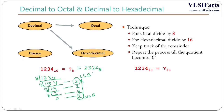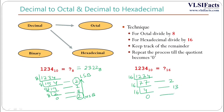Now let us convert the same decimal number 1234 to its hexadecimal equivalent using a similar division process. Dividing by 16: 1234 gives quotient 77, remainder 2. Then 77 divided by 16 gives quotient 4, remainder 13. Finally, 4 divided by 16 gives quotient 0, remainder 4.